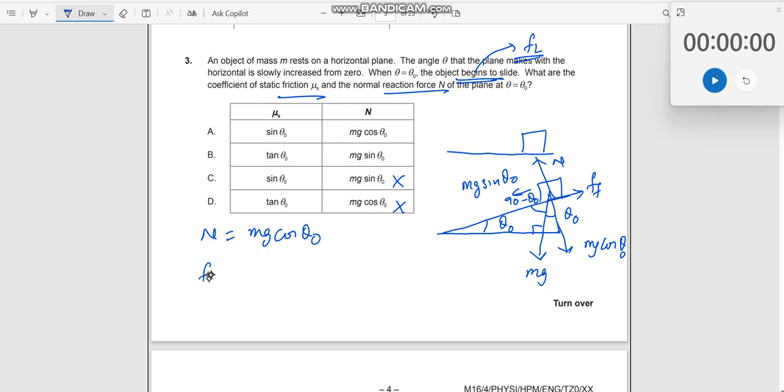Then frictional force. Frictional force is equal to Mg sin theta 0. Now, what is frictional force? μ times N should be equal to Mg sin theta 0. What is N here? We already have found out from here. Plug in this value here.